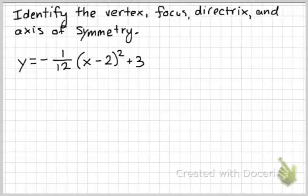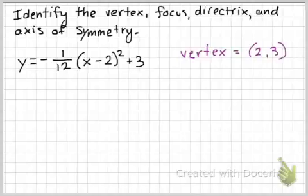Another thing that you'll be asked to do is look at an equation and identify the vertex, focus, directrix, and axis of symmetry. I think the easiest way to do this is to graph it out, to definitely draw a sketch. But, the first thing you can always tell is the vertex. I can see that my vertex is at 2, 3. So, we can start there.